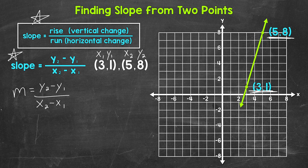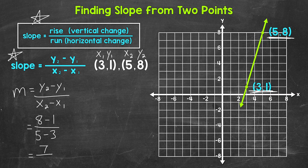Plugging these in, we have slope equals y2 is 8 minus y1 is 1, so we have 8 minus 1 there, and then x2 is 5 minus x1 is 3, so we have 5 minus 3. 8 minus 1 gives us 7, and 5 minus 3 gives us 2. That's our slope: 7 over 2, 7 halves. 7 is our rise and 2 is our run. You may also hear the rise called the change in y, and the run called the change in x.